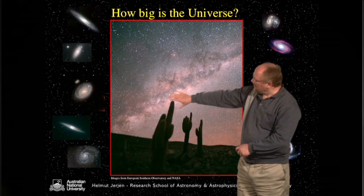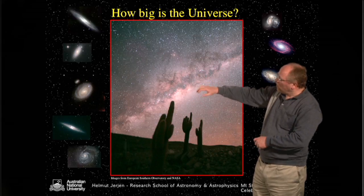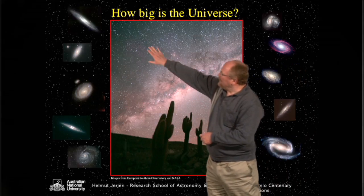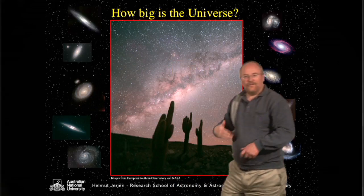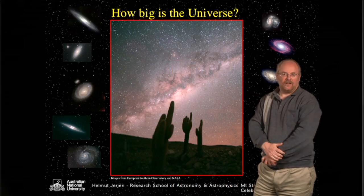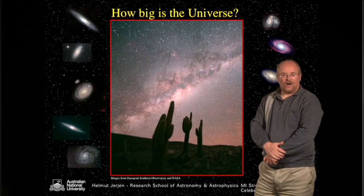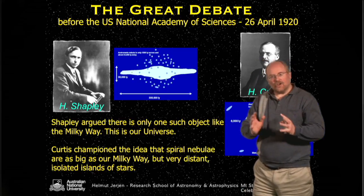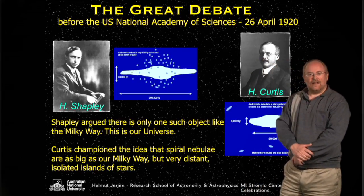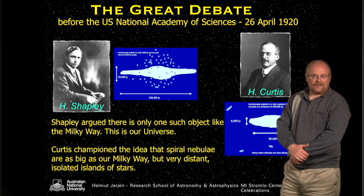This is the Milky Way with all the stars. When you look with the Hubble Space Telescope or with other telescopes into different regions, you identify spiral nebulae, and the fundamental question was how far away they are — are they part of our Milky Way or further away? This whole discussion about the size of the universe led to the famous Great Debate before the US National Academy of Science on the 26th of April of 1920.